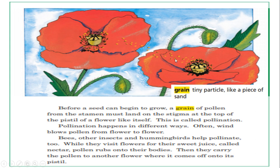Now over here we are seeing some traveling grains. So before a seed can begin to grow, a grain of pollen from the stamen must land on the stigma at the top of the pistil of a flower like itself. So as we are seeing here, the pollen is traveling from one flower to another to land on the stigma at the top of the pistil. This is called pollination.